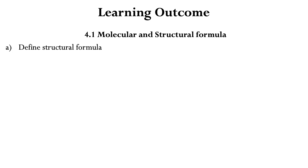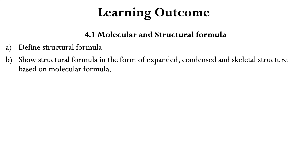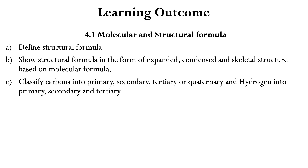The learning outcomes are: (a) define structural formula; (b) show structural formula in the form of expanded, condensed, and skeletal structure based on molecular formula; and (c) classify carbons into primary, secondary, tertiary, or quaternary, and hydrogen into primary, secondary, and tertiary.